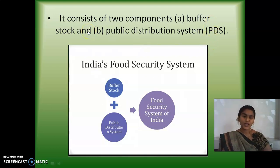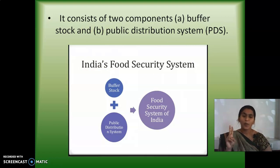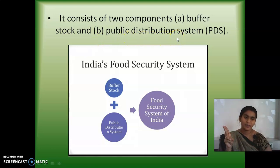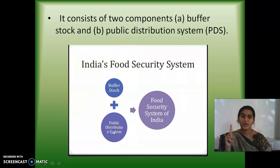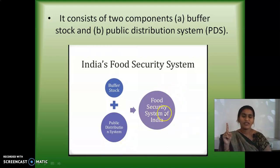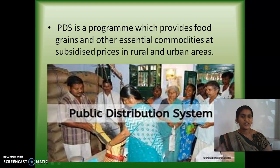The food security system of India has two components: one is buffer stock, and the other is the public distribution system. So the food security of India has two sections — buffer stock and public distribution system.